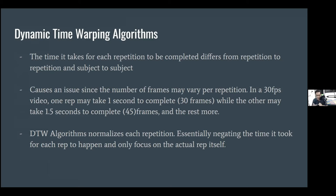Each repetition is distinct in terms of time. In our system that takes 30 FPS videos, one repetition may take 30 frames, while one and a half seconds may take 45 frames, and two seconds may take 60 frames. We see a problem here. DTW algorithms essentially normalize each repetition, negating the time it took for each rep to happen and only focusing on the actual rep itself. It converts each repetition to a specific number of frames.